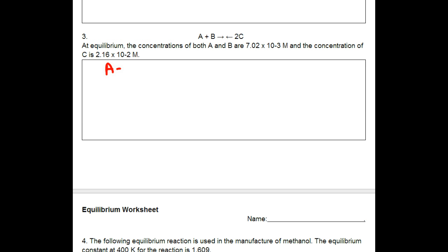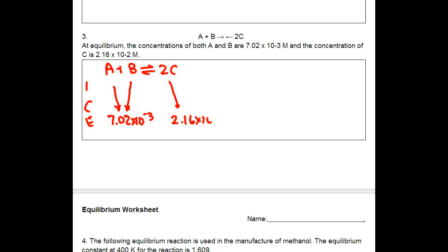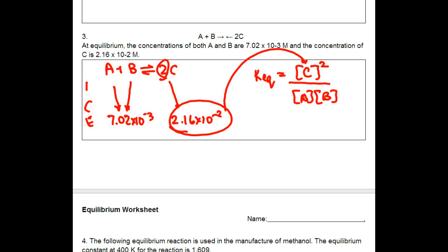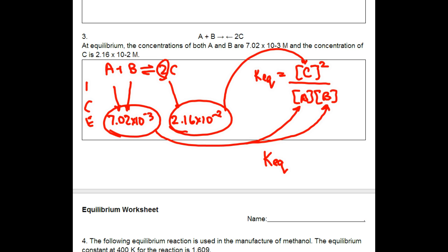For number three, we're again given equilibrium concentrations, and we write out our ICE table. For A and B, it's both 7.02 times 10 to the negative 3. And for C, it is 2.16 times 10 to the negative 2. From the reaction itself, we write out the K-equilibrium. In this case, it's the concentration of C squared, because we have that coefficient, divided by the concentration of A times the concentration of B. The only thing to be careful about is squaring that number when you plug it in. The K-equilibrium here should be equal to 4.39 times 10 to the power of negative 8.